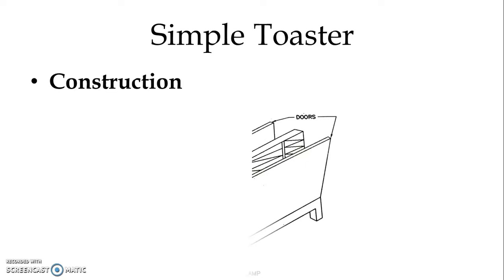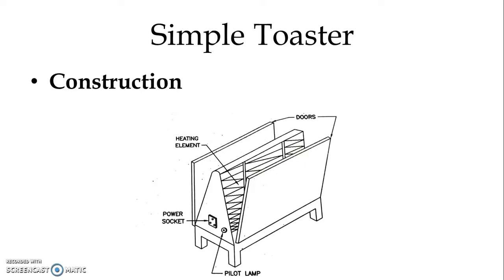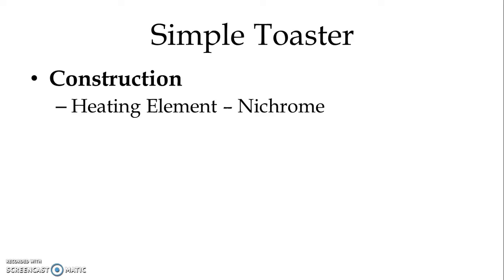Now let us see the construction. We can see the very simple toaster: we have a heating element, a power socket, we have a pilot lamp, and on both sides of the heating element we have two different doors. The heating element is made of nichrome.